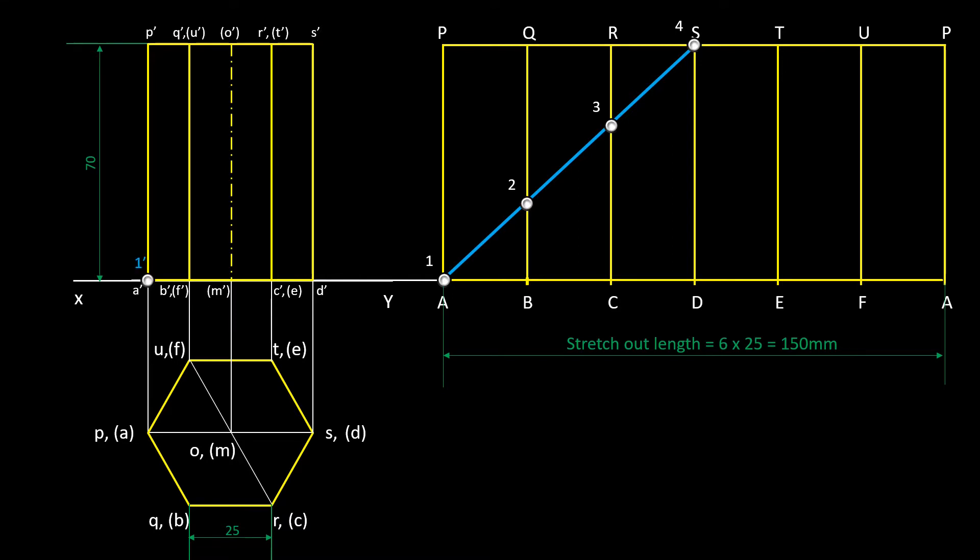Project point 2 to the front view of edge BQ. Project point 3 to the front view of CR. Project point 4 to the front view of edge DS.